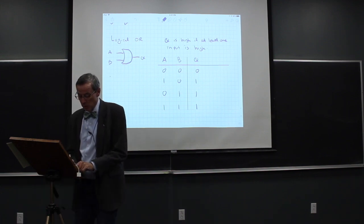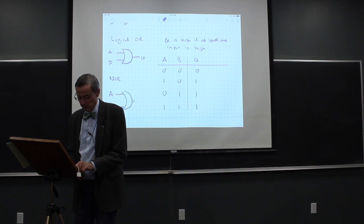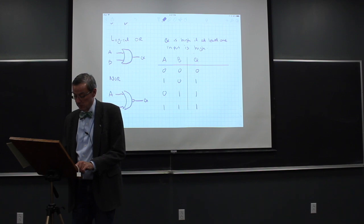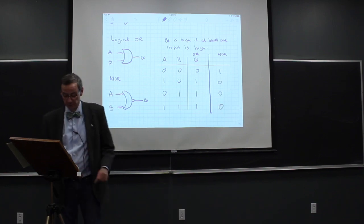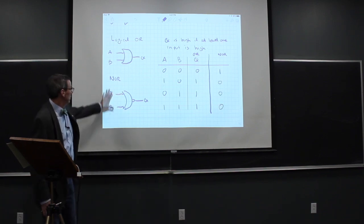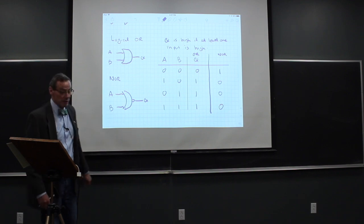There is a NOR gate, which as you can guess from its symbol is the OR symbol with a bubble. The NOR is the complement of the OR, so its outputs are one, zero, zero, zero.